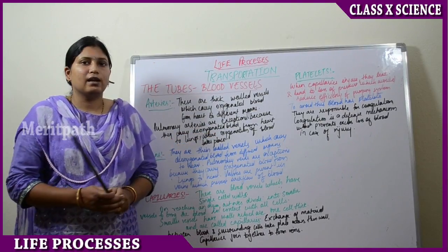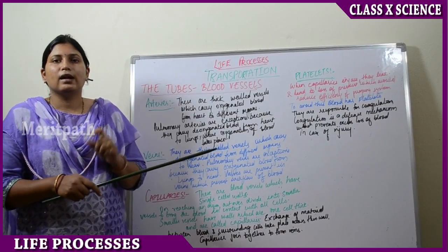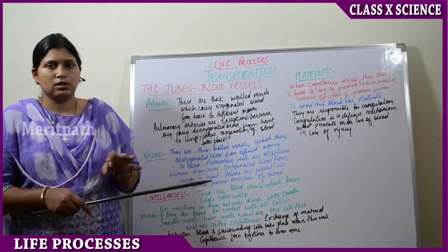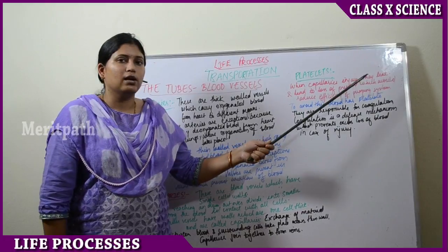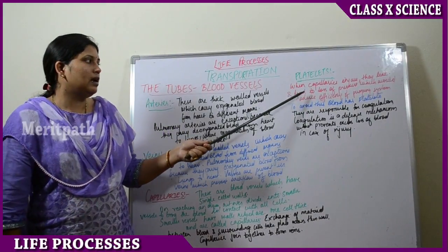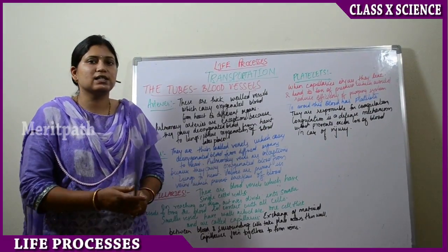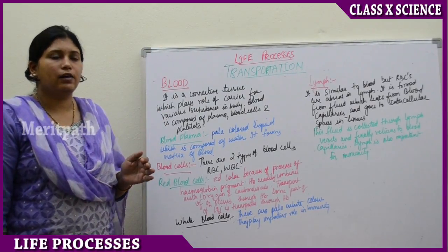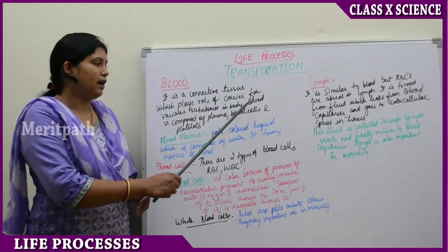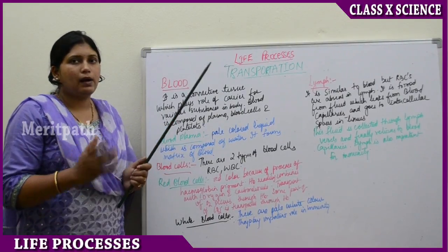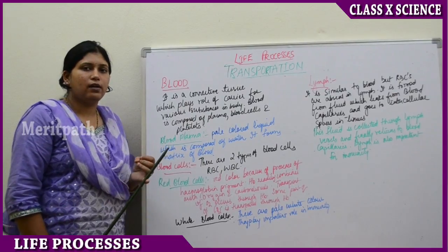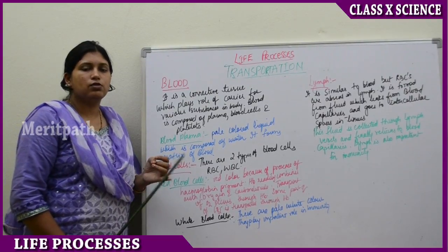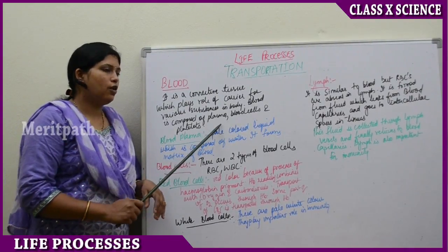Whenever there is an injury or trauma, there will be leakage in the capillaries, causing bleeding and loss of pressure, which reduces the efficiency of pumping. Blood is a connective tissue that plays a role as a carrier of various substances in the body — it transports food, wastes, and water. Blood is composed of plasma, blood cells, and platelets.